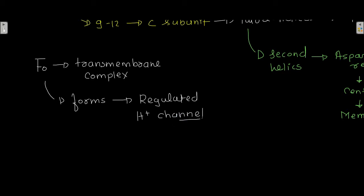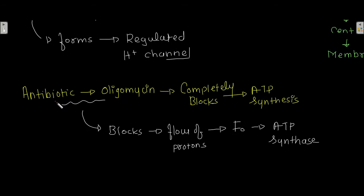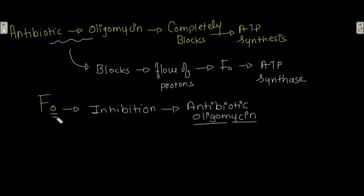There is an antibiotic called oligomycin that completely blocks ATP synthesis. Oligomycin does this by blocking the flow of protons through F0 of ATP synthase. The subscript 'O' in F0 represents the inhibition of F0 by the antibiotic oligomycin.